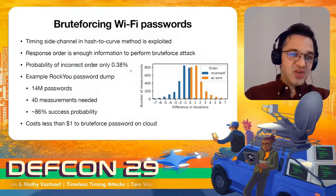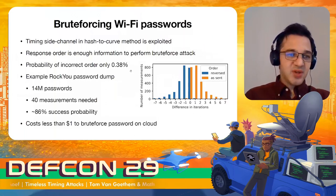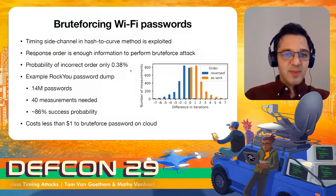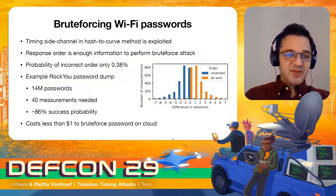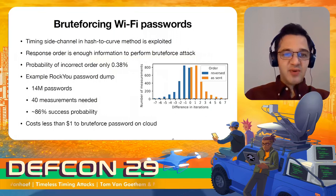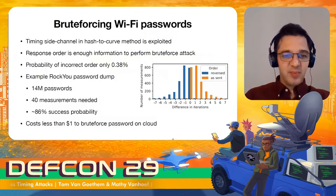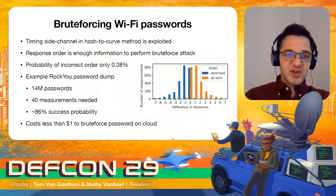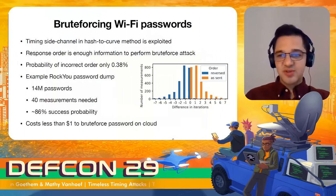This response order allows the adversary to brute-force the victim's password with over 99% success probability — the response order correctly reflects server execution time 99% of the time. Using this information to perform an offline dictionary attack against the RockYou password dump (~140 million passwords), 40 measurements yield an 86% probability of correctly recovering the password, at a cost of about $1 on an Amazon cloud server.